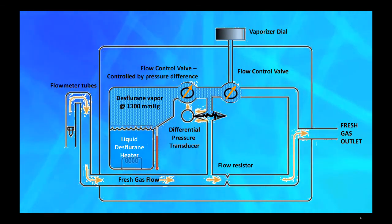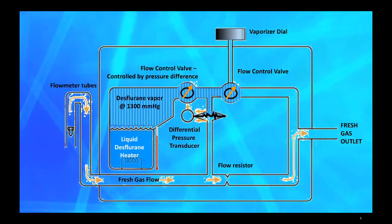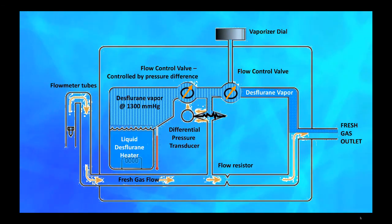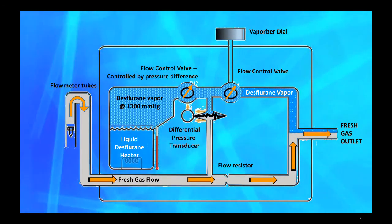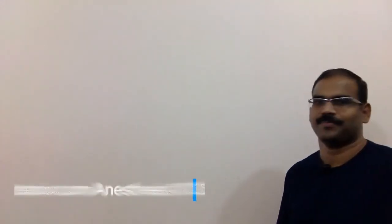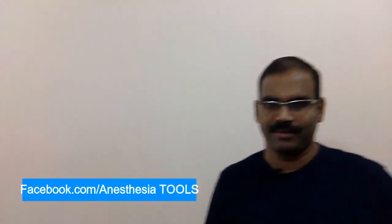The second flow control valve is controlled by us through the vaporizer dial. The reason why we need almost two atmospheric pressure is to act as a driving pressure so that the vapor joins the fresh gas flow. You can see the fresh gas flow and the gas-vapor blending.